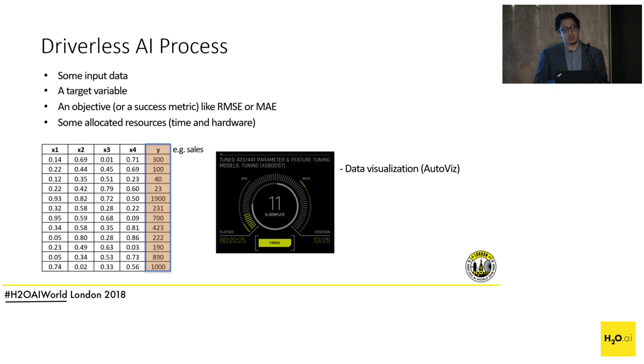I'd like to briefly cover how Driverless AI works. It's very simple: you have some input data, some variables, and a target which you want to predict. For time series the setup is the same — you predict a target variable and define an objective function, something you want to optimize. You allocate some resources, set time constraints, and based on your hardware, Driverless AI runs for a number of iterations and gives you outputs — including visualizations that capitalize on interesting patterns.